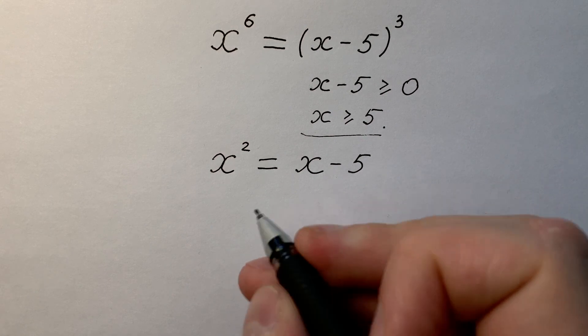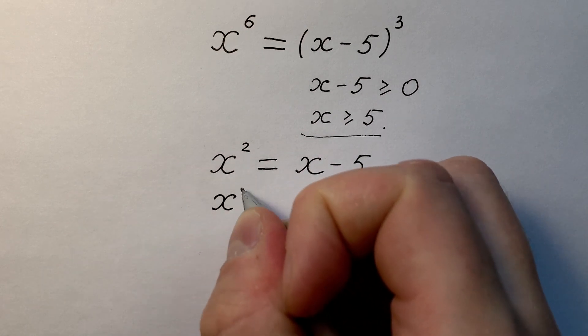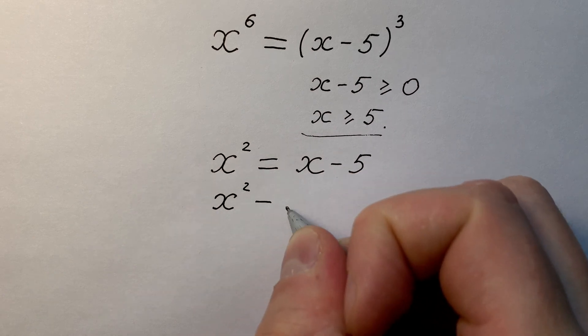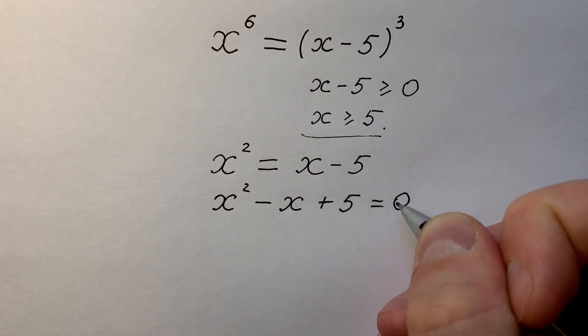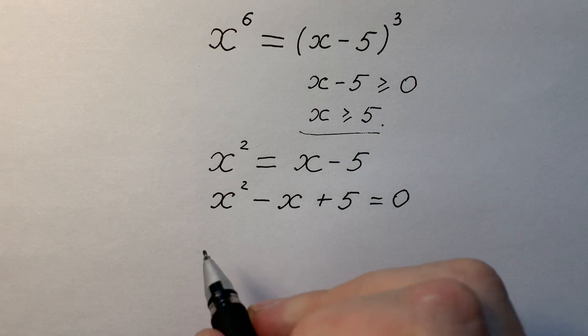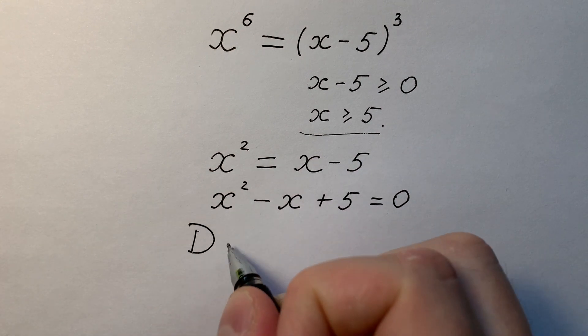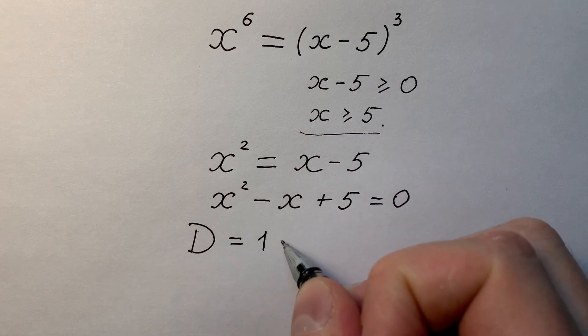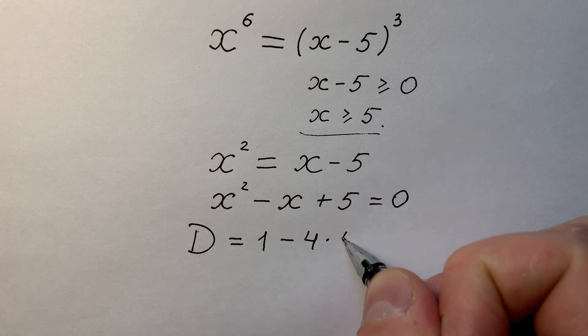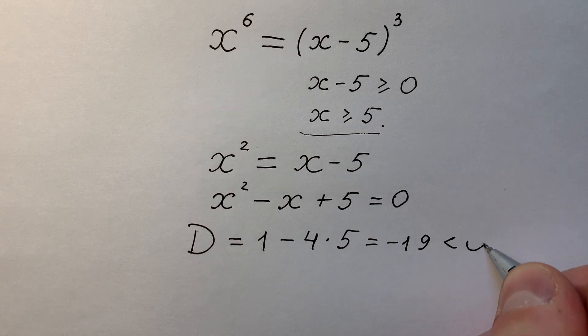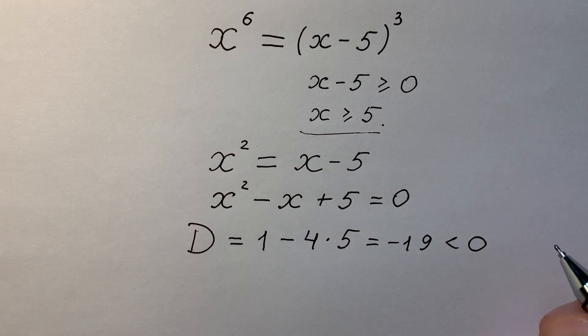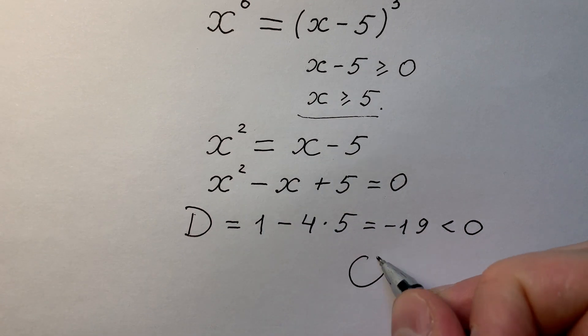We have a simple quadratic equation and there we have that x to the power of 2 minus x plus 5 and it equals to 0. And what can we see there? That discriminant equals to 1 minus 4 times 5 and it's minus 19. It's less than 0. That's why we don't have any real solutions there.